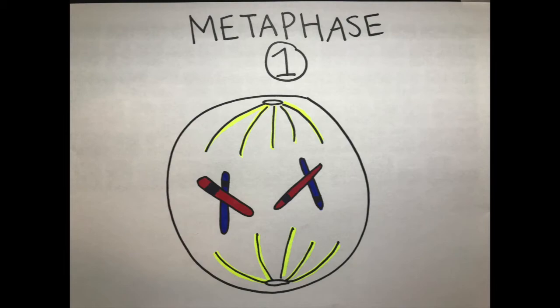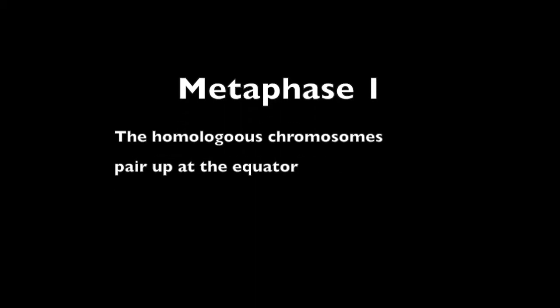Next, in metaphase I, the homologous chromosomes pair up at the equator, meaning the center of the cell.